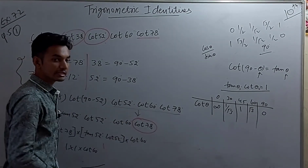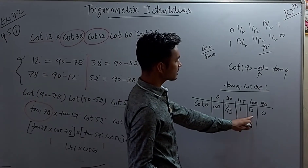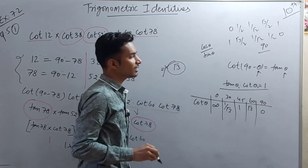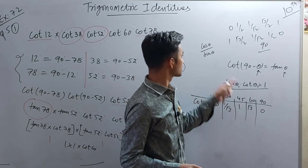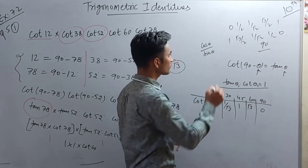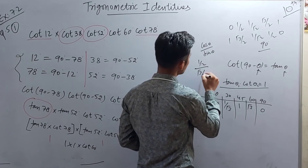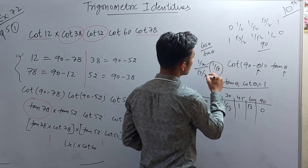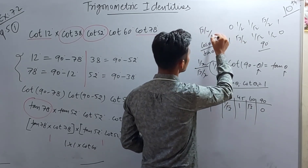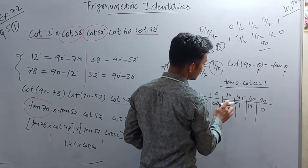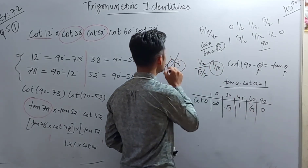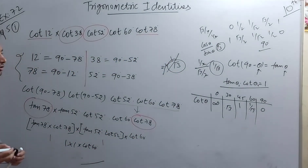So we need cot 60°. cot 60° equals cos 60° divided by sin 60°, which is (1/2) divided by (√3/2). The 2s cancel, giving us 1/√3. Therefore, the final answer for this expression is 1/√3.